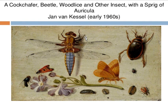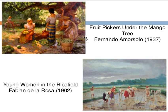We also have a cockchafer beetle, woodlouse, and other insects with a sprig of auricula, painted by Jan van Kessel in the early 1660s — this is the type of subject: animals. Another is 'Fruit Picker Under the Mango Tree' by Fernando Amorsolo, and 'Young Woman in the Rice Field' by Fabian de la Rosa in 1902, which is still life.